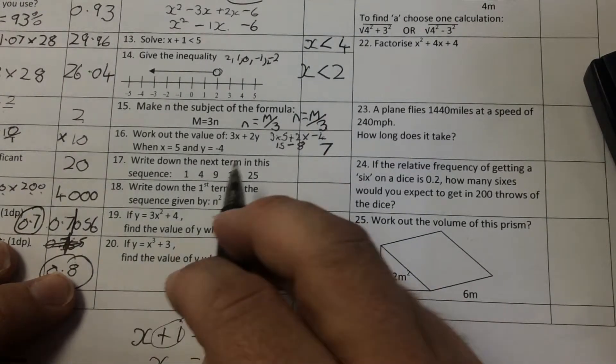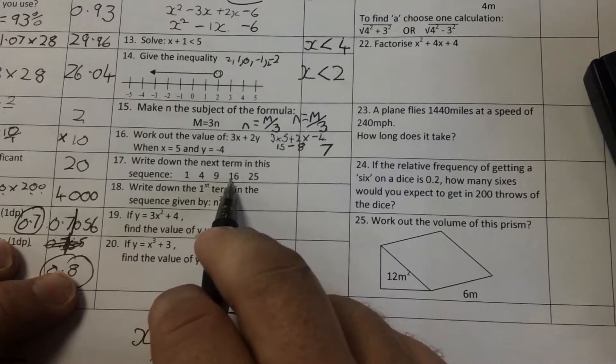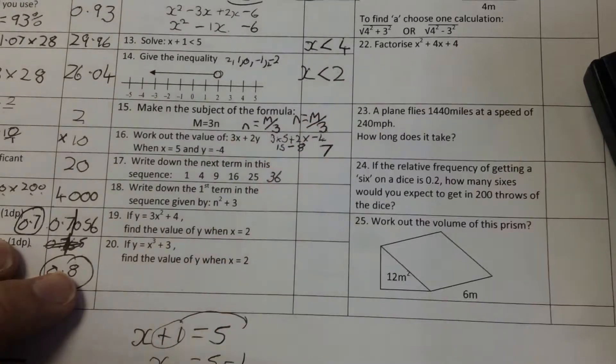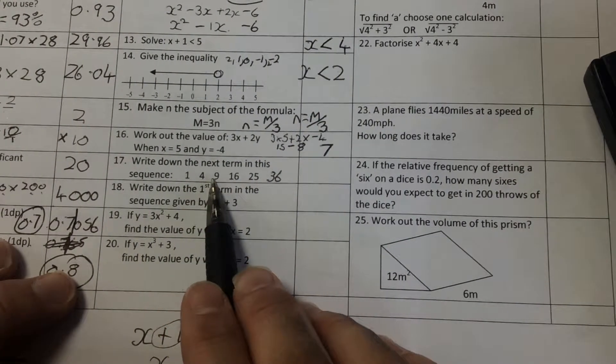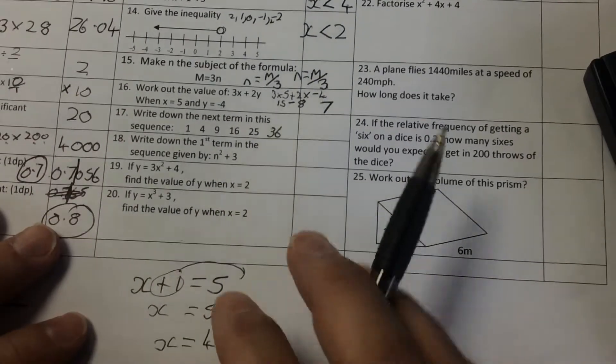The next term in the sequence is square numbers. 1 times 1. 2 times 2. 3 times 3. 4 times 4. 5 times 5. So the next one will be 6 times 6 is 36. What you could have said is going up in threes, up in fives, up in sevens, up in nines, and then up in 11.